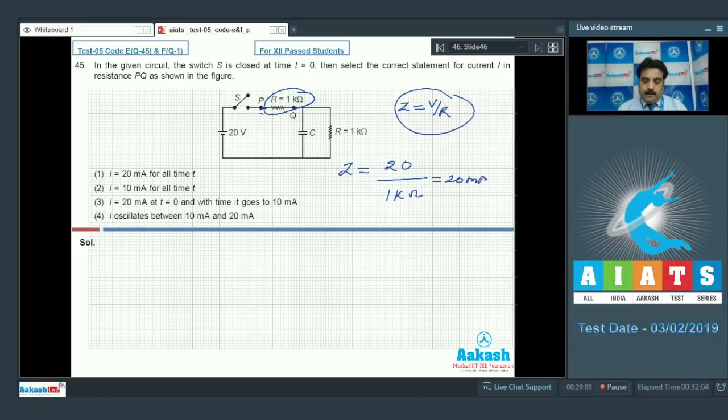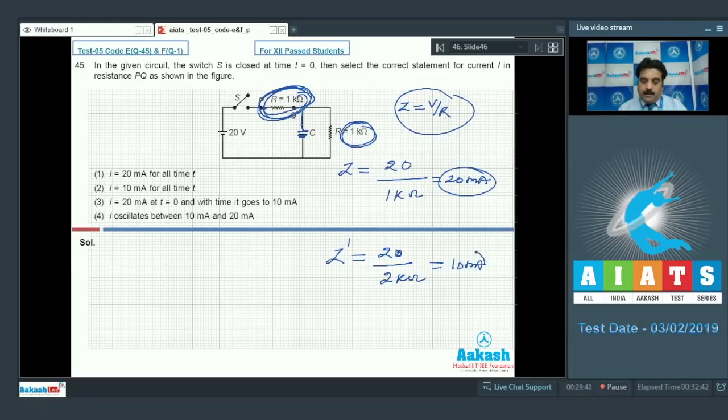So current is 20 milliampere. After a long time, the capacitor will be fully charged and no current flows through it. Then current follows the path of resistances 1 k ohm and 1 k ohm, total 2 k ohm. So I dash equals 20 upon 2 k ohm equals 10 milliampere.